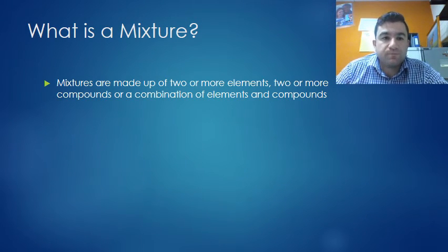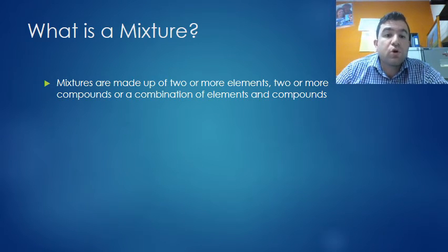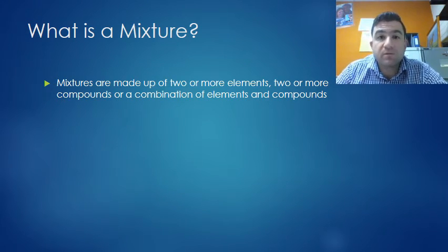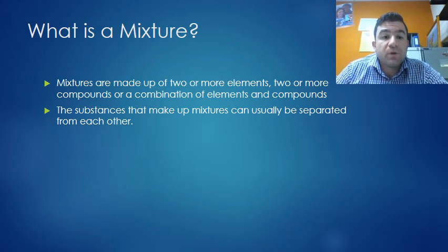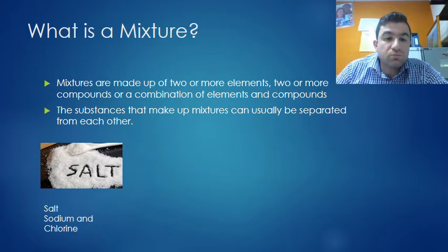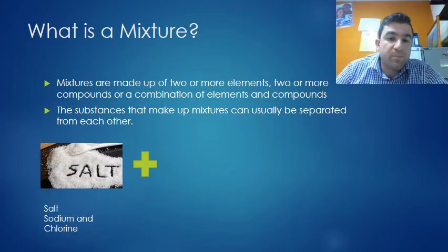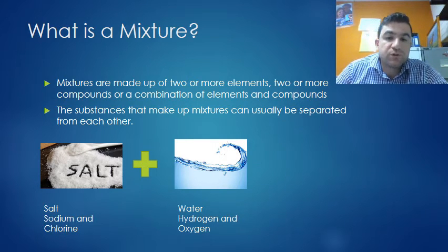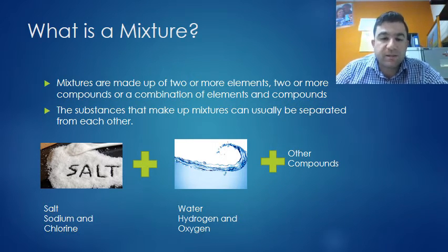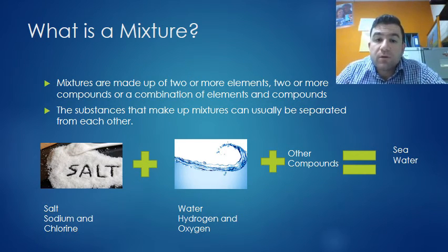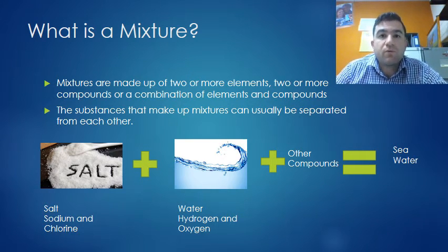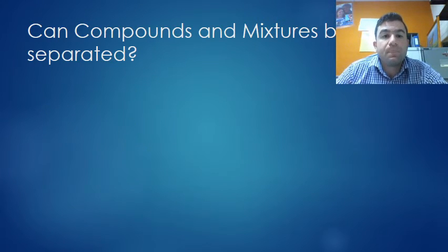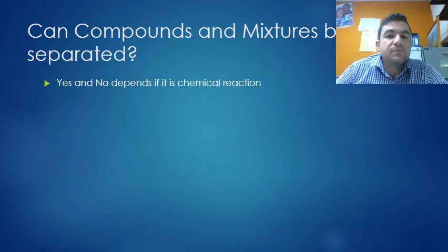What is a mixture? Mixtures are made up of two or more elements, two or more compounds, or combinations of elements and compounds. The substances that make up mixtures can usually be separated from each other. If we have salt, sodium chloride, which is a compound, and we have water, which is hydrogen and oxygen, which is another compound, and other components, we get sea water. And we can usually separate them through evaporation or something like that. Can compounds and mixtures be separated? Yes they can. It depends if it's a chemical reaction.